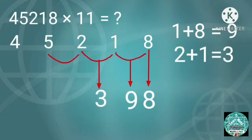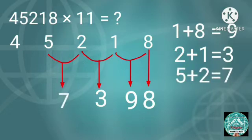Then add 5 and 2. 5 plus 2 equals 7. Write 7 here.